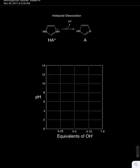Let's begin. The imidazole dissociation is shown here. We will call the protonated form HA+, and the deprotonated form will be A. The pKa of imidazole is approximately 7.0.